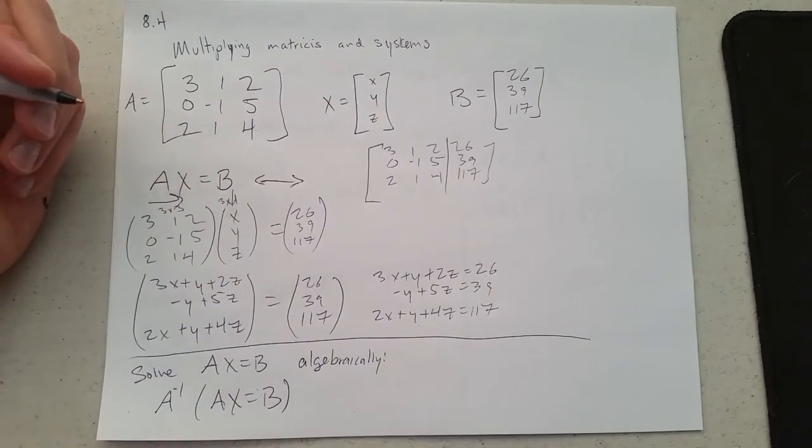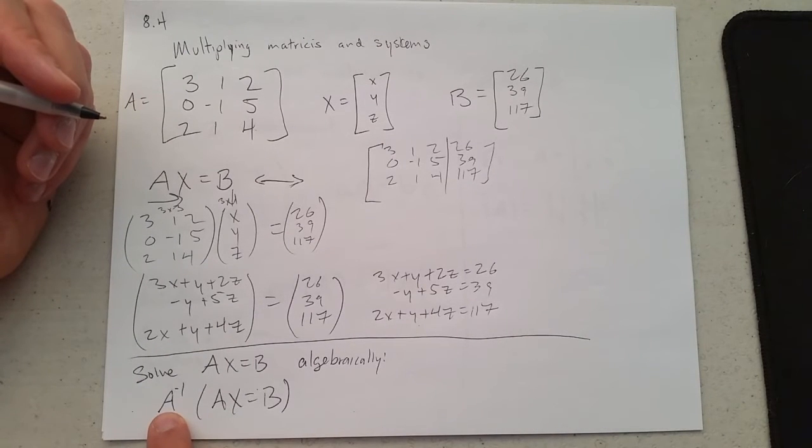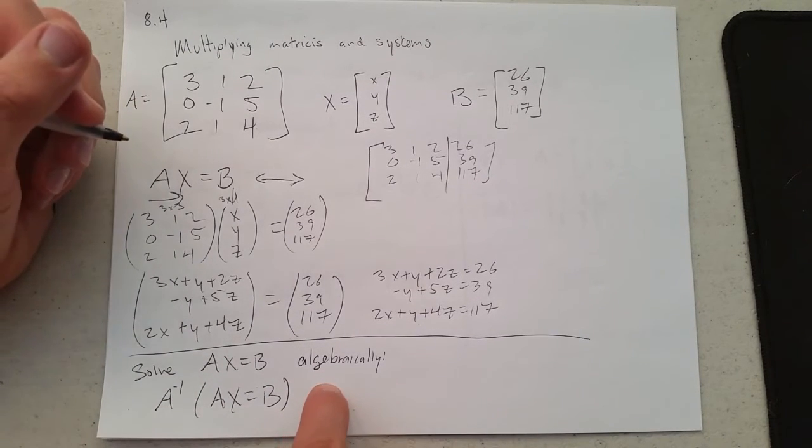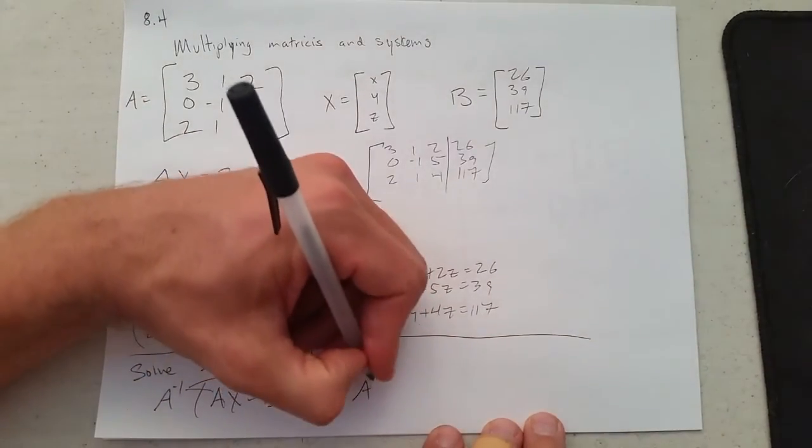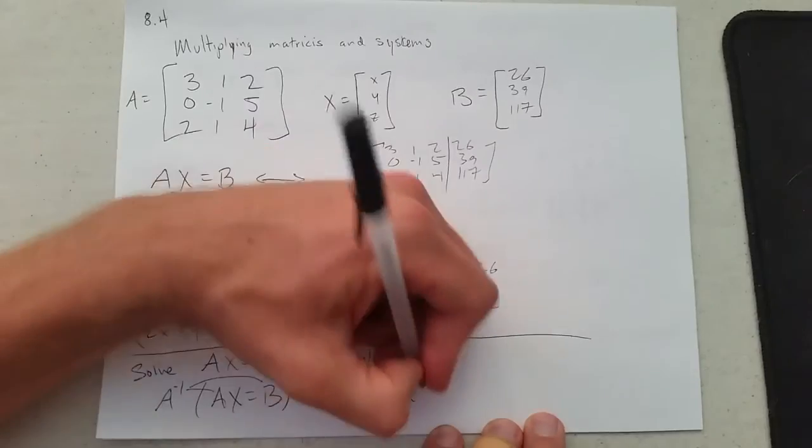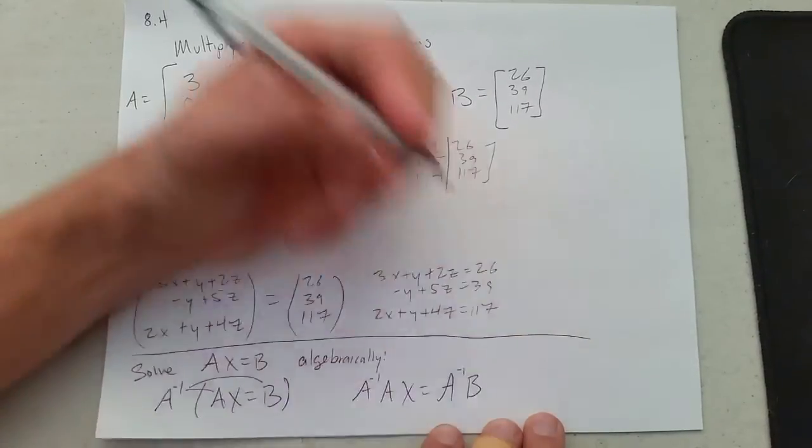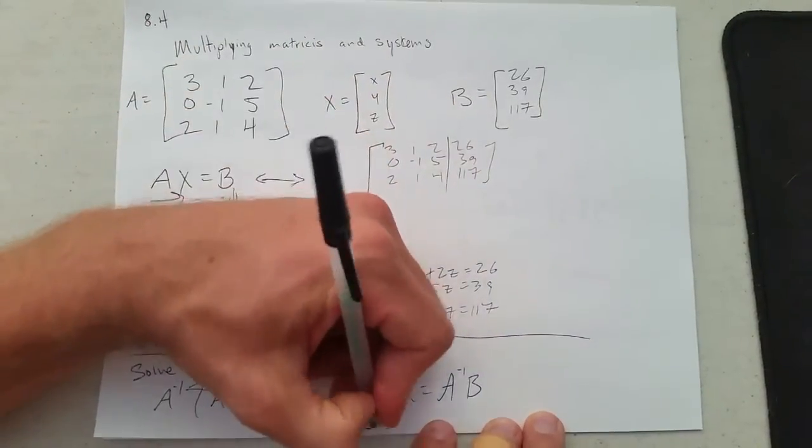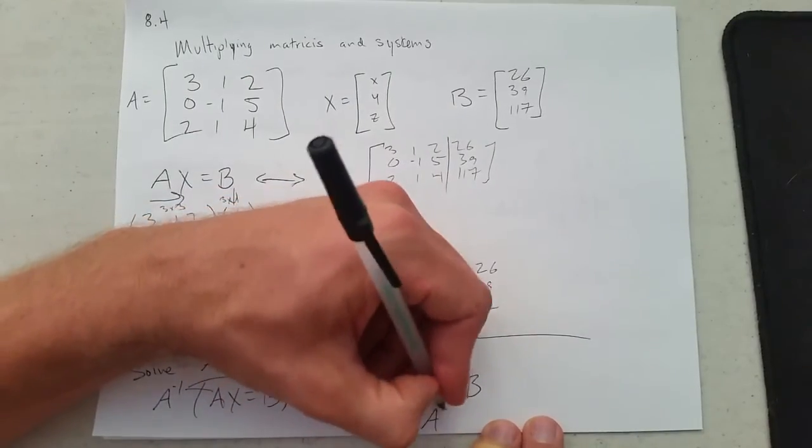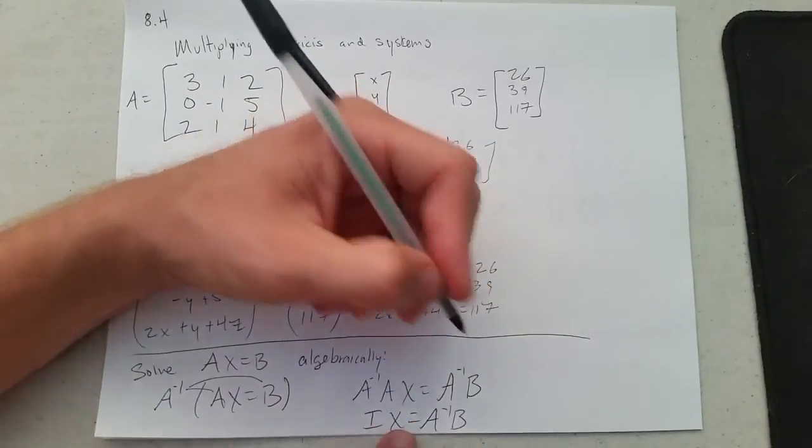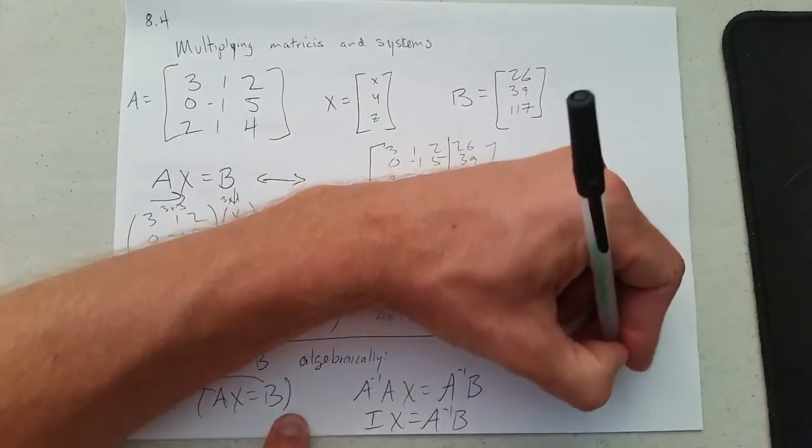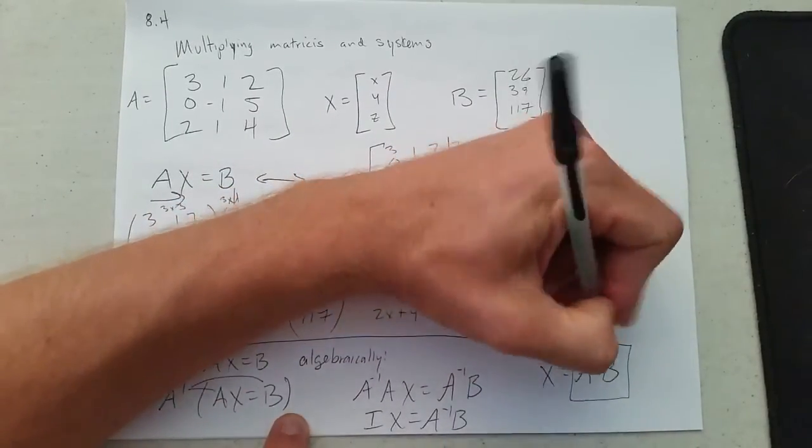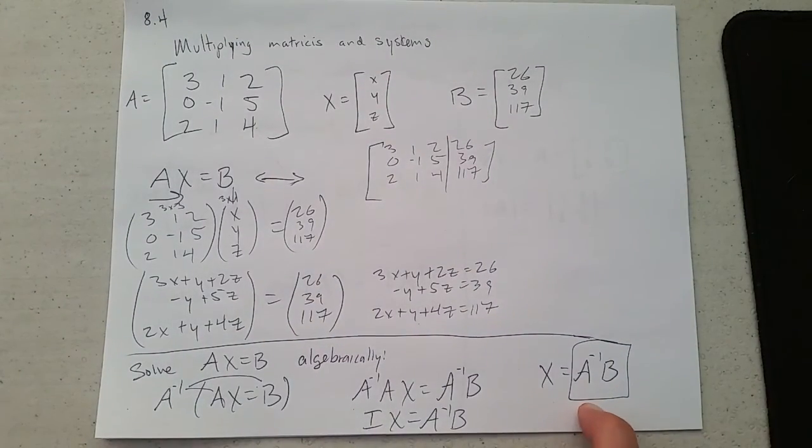Now when we do matrix algebra, we have to be a little more careful because multiplying on the left is not the same as multiplying on the right. So I do need to treat both sides fairly. So I have A inverse A x equals A inverse B. A inverse times A is the identity matrix, and identity matrix times x is x.